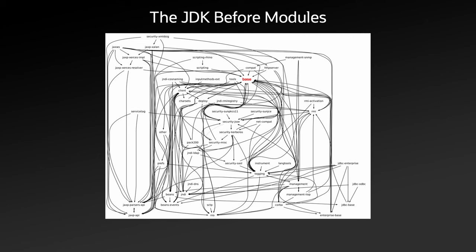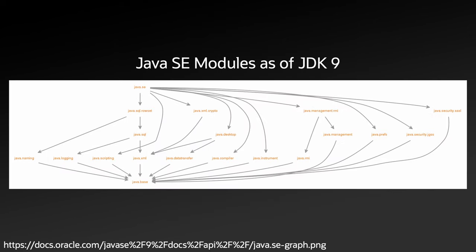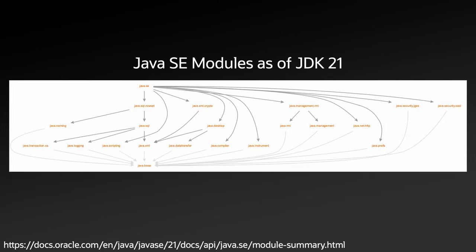The final outcome of JEP 200, when delivered as part of JDK 9, was a JDK that was transformed into a well-structured, modularized entity with 19 discrete modules, which have clearly defined one-way dependencies. In the time since JDK 9, two new modules have been added to the Java SE specification — Java Transaction XA and Java Net HTTP — both added in JDK 11.